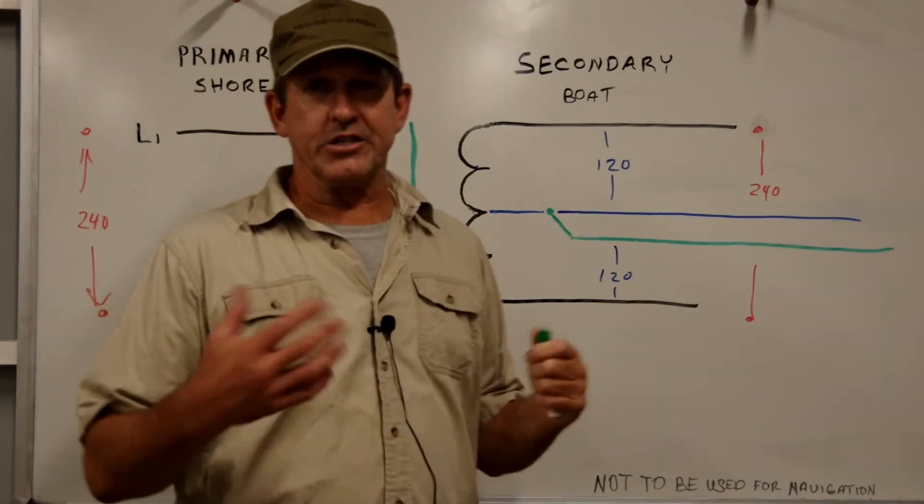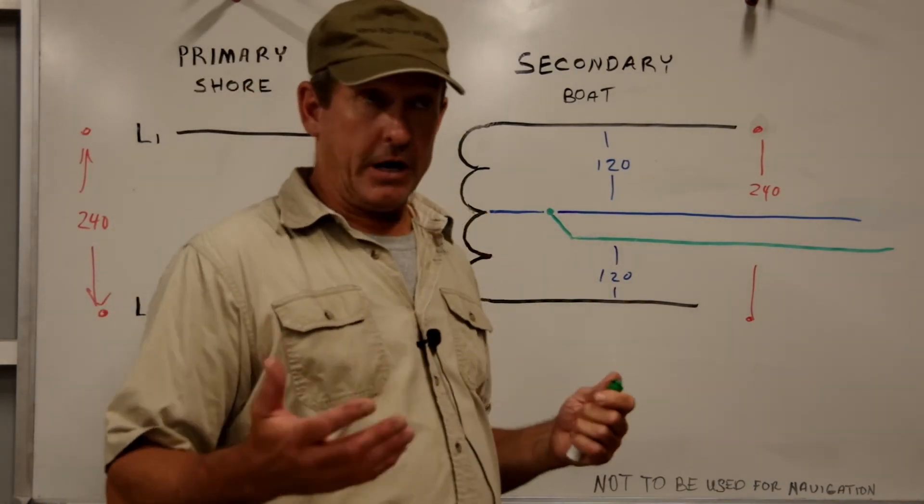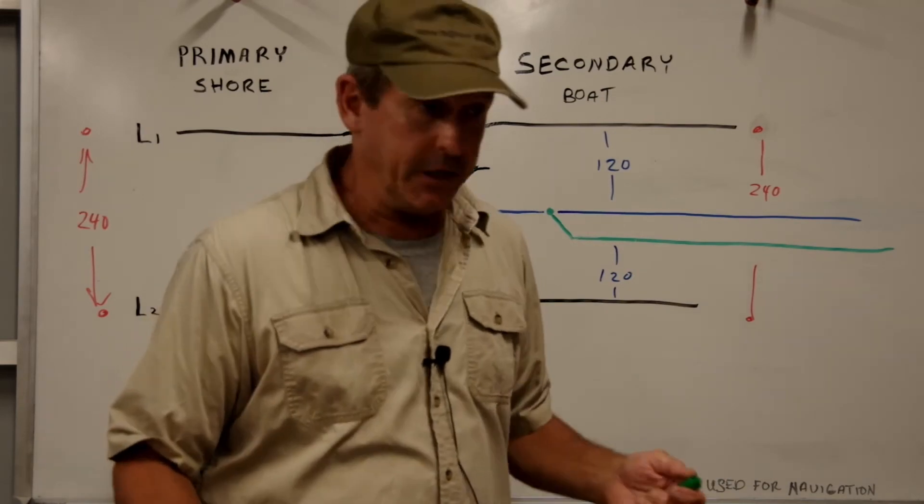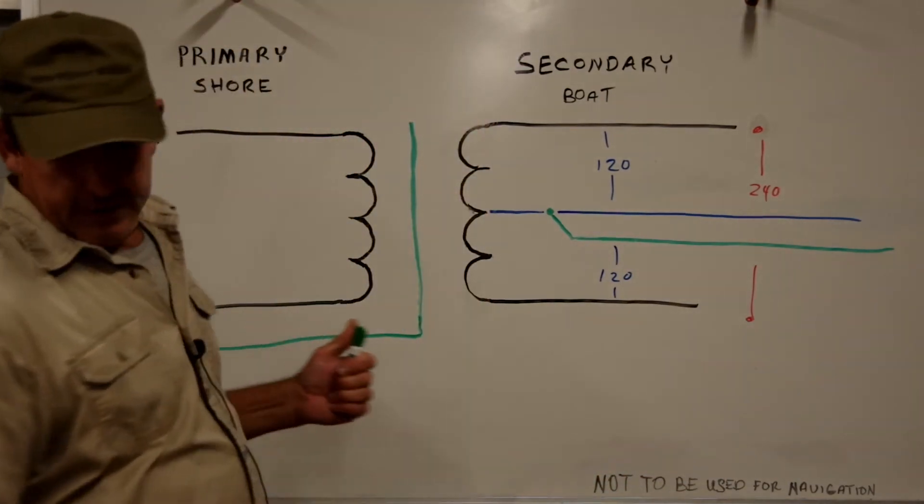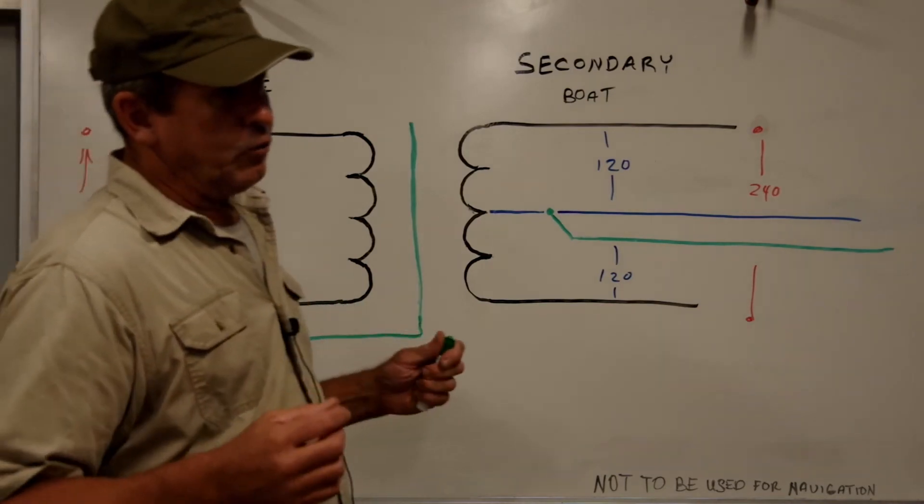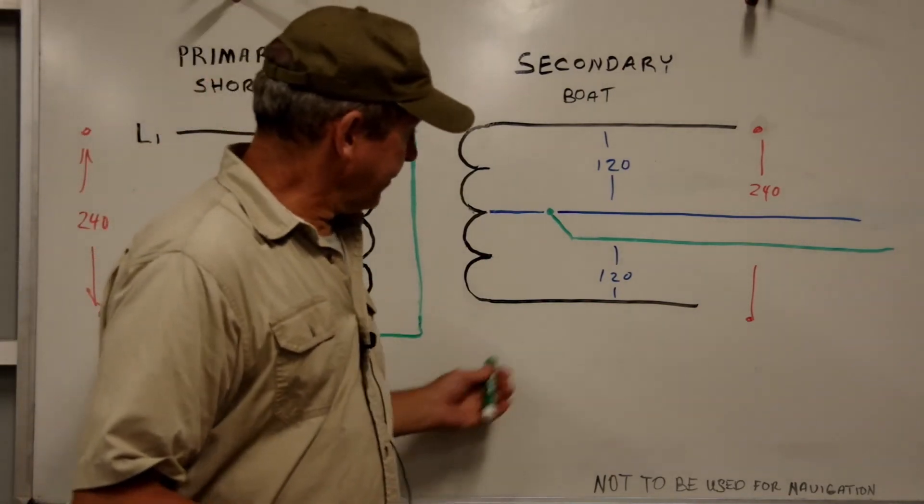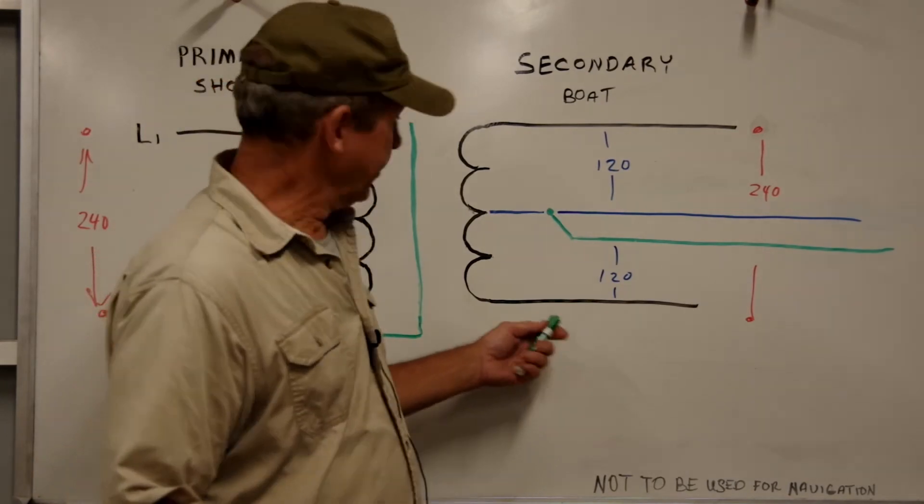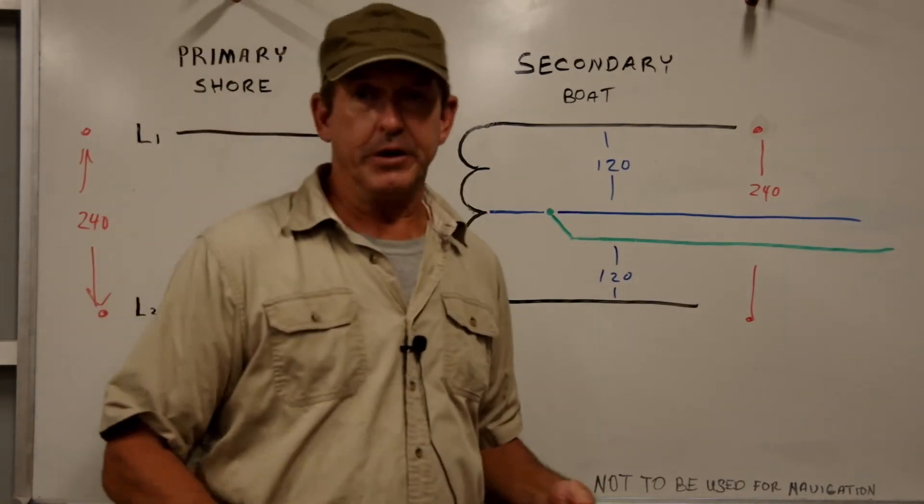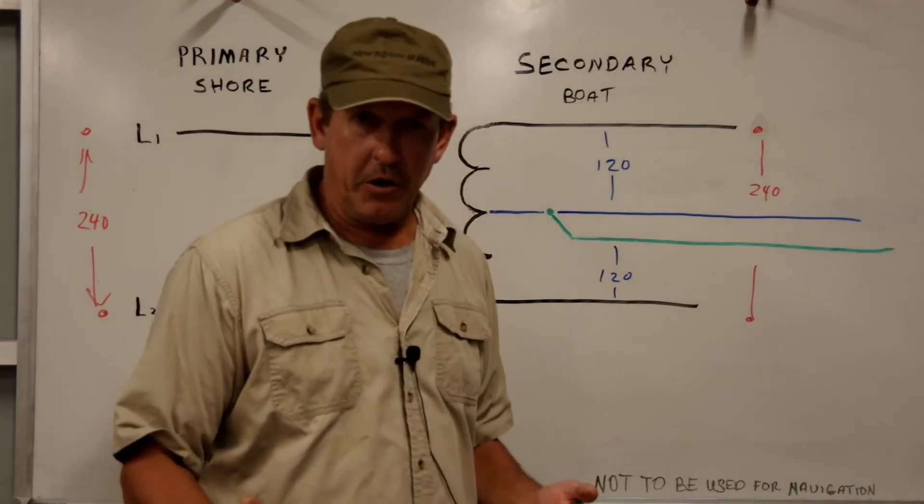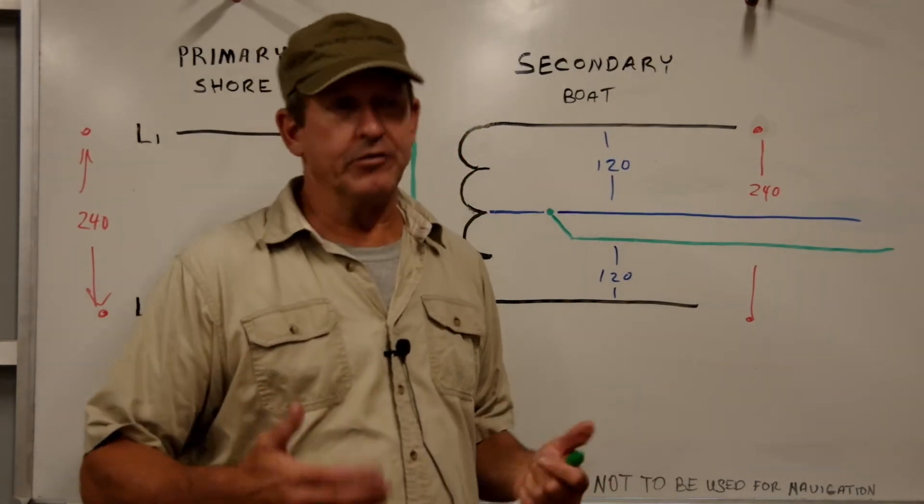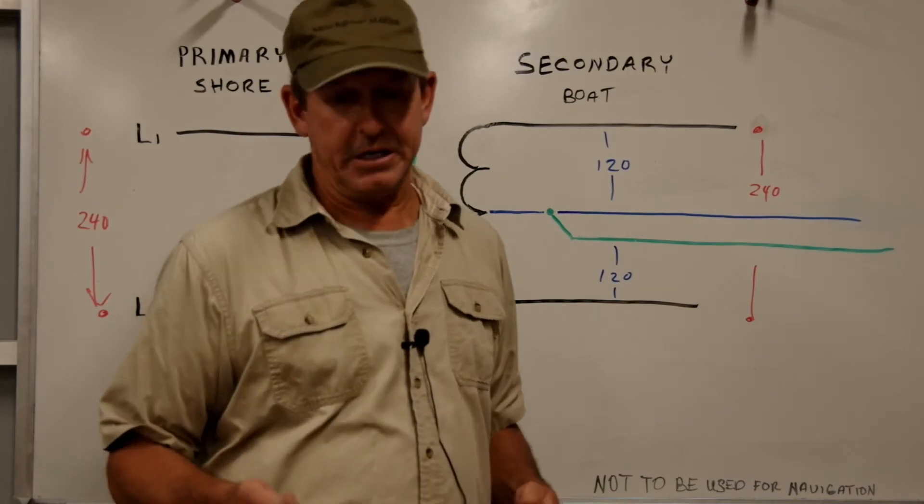The second is galvanic isolation. By doing our AC safety ground this way, we're not connected to the dock anymore, and therefore we are not sharing our anodes or zincs with the rest of the marina. We also can take advantage of the boosting feature if you choose to get a boosting transformer, because now if we come to a marina and the voltage isn't quite up to 240, our transformer will come online and boost our voltage back up to where it should be, and our appliances are going to be a whole lot happier about that.